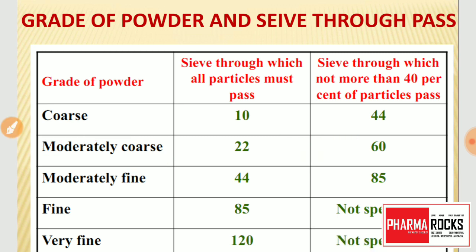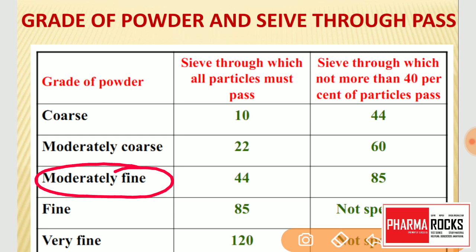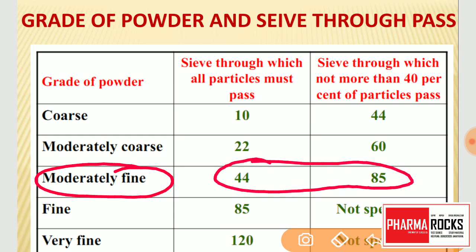Third is moderately fine powder. The grade for moderately fine powder is 44 by 85. This means all the particles must pass from sieve number 44, but not more than 40% of particles pass through sieve number 85.